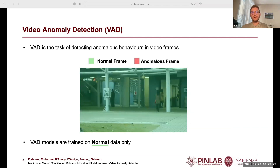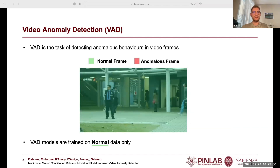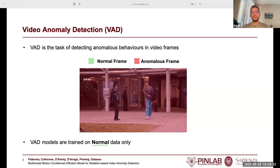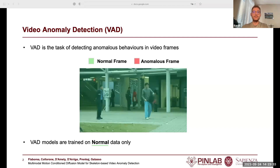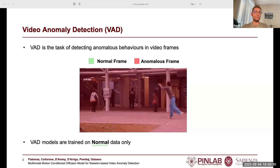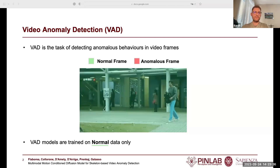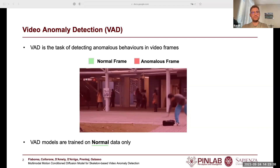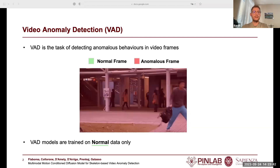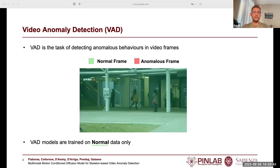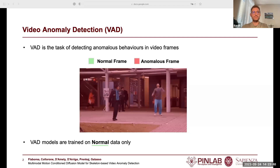Generally, models for video anomaly detection are considered one-class classificators. They focus only on normal data, which neglects the diversity of normal behaviors. For example, the walking people have different strides and can move laterally, as a security guy in the foreground. All these components, even within the normal data itself, might make the task very complex.